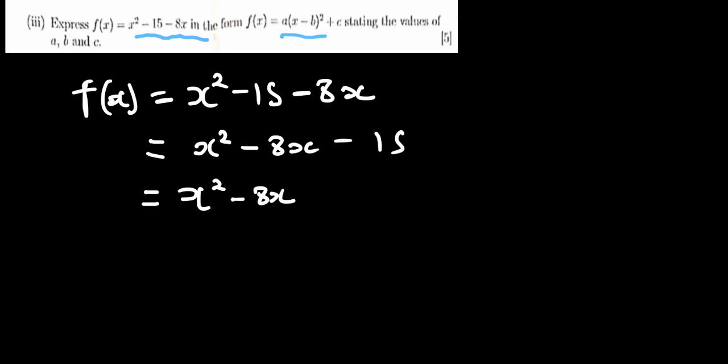I divide the coefficient of x by 2 and then I square the expression. So I'm going to say plus 8, which is the coefficient of this x. I'm going to divide it by 2 and then I'm going to say squared. And then minus the same thing.